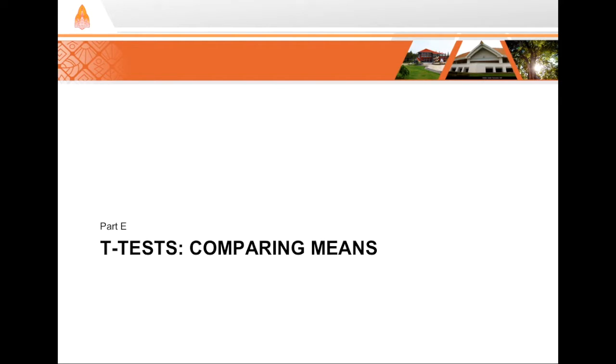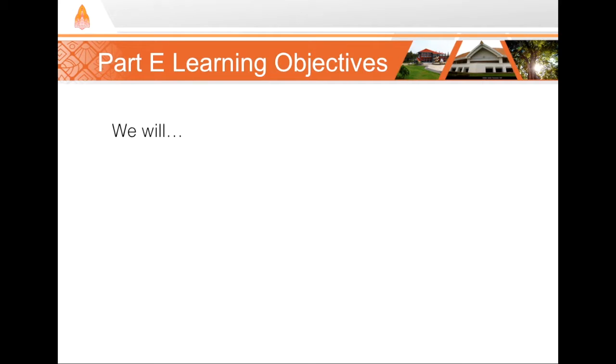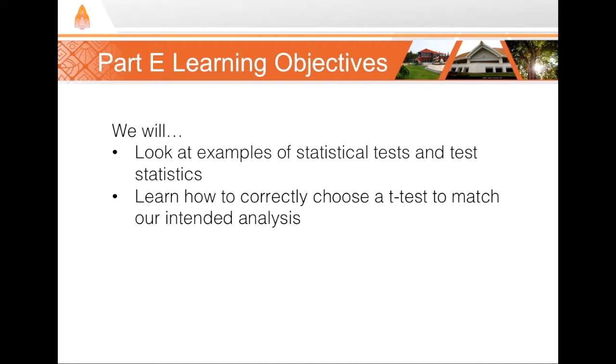In this section, we'll look first at some examples of statistical tests and their resulting test statistics. There's many tests that we can use to generate different test statistics. In Part E, we're focusing only on the t-test. In fact, there are many variations even of the t-test depending on our situation. So we'll learn how to correctly choose the right t-test, and finally, I'll take you through the general process of executing a t-test.